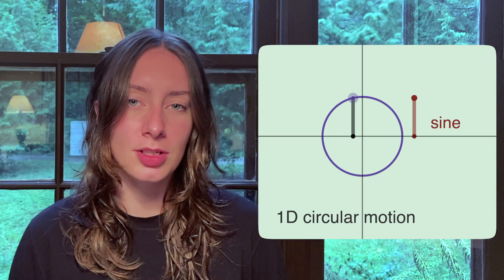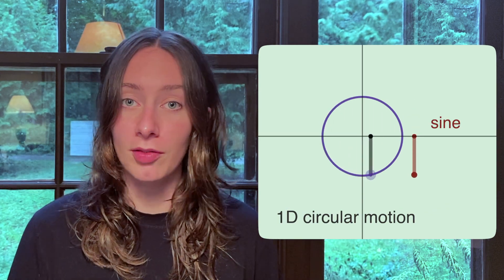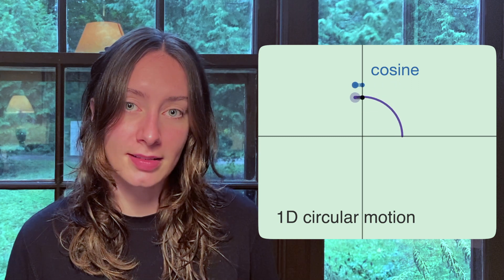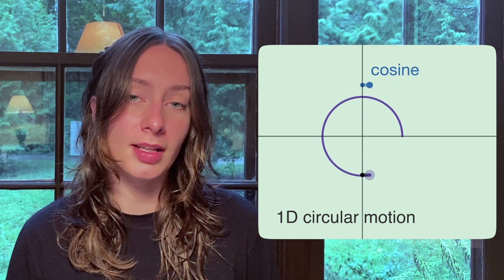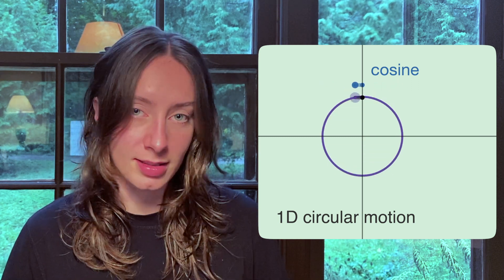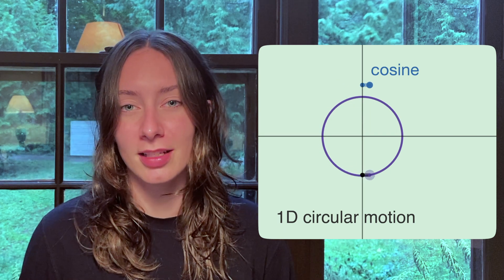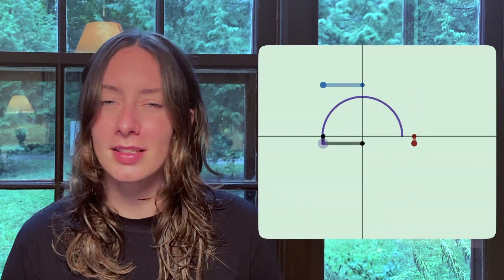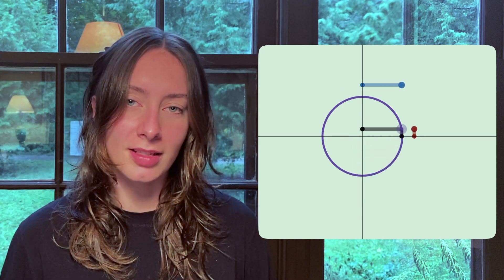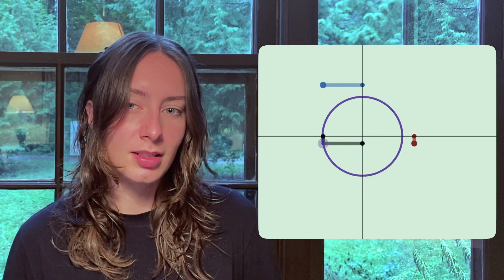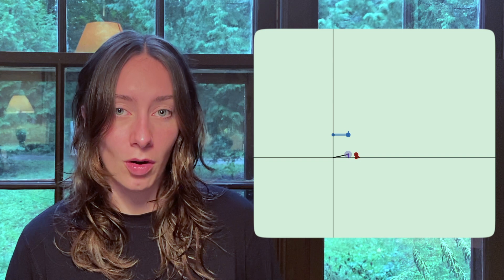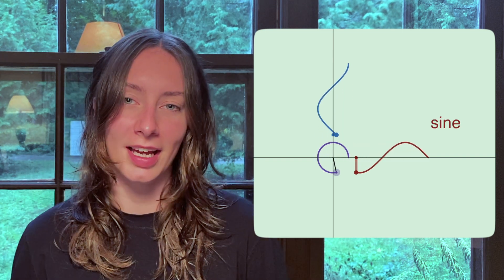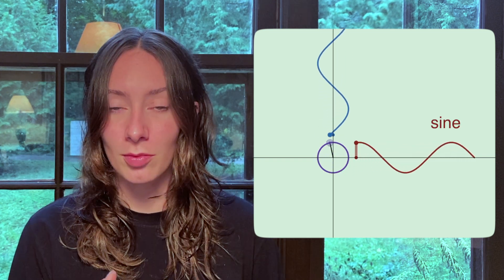Sine is just the one-dimensional projection of a point moving in a circle. Cosine is the exact same thing, just projected onto the other axis — it's still the shadow, just from a different light source. But wait, how does the classic sine curve play into this depiction? If you graph the shadow over time, you'll get our favorite sine wave. And same thing with cosine.